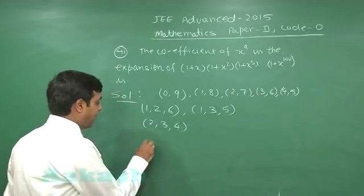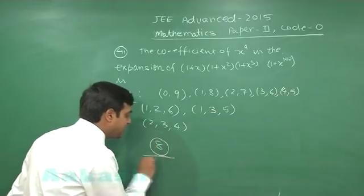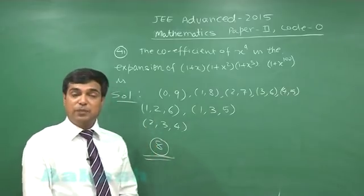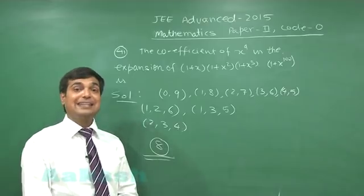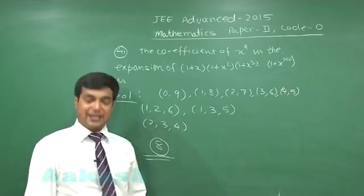So in all, we find there are 8 such possible terms. Therefore, the coefficient of x^9 is 8. Move to the next one.